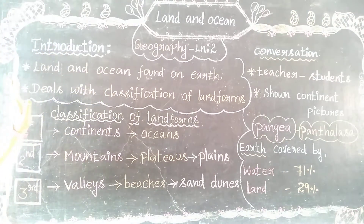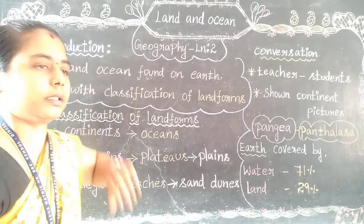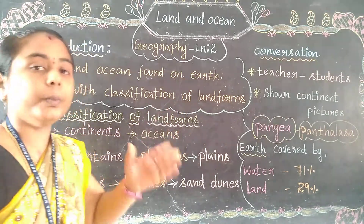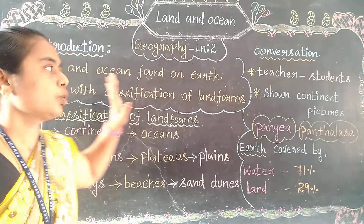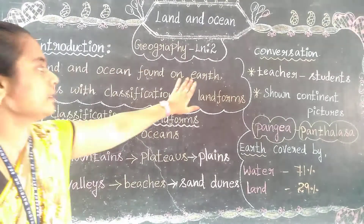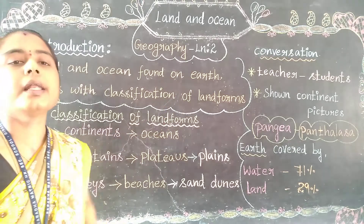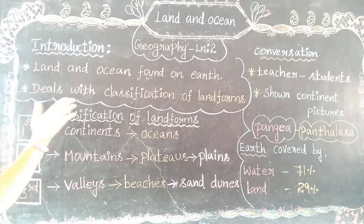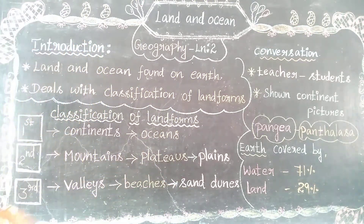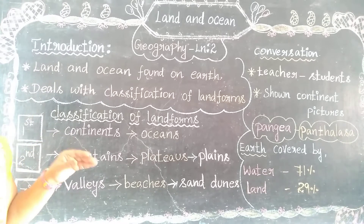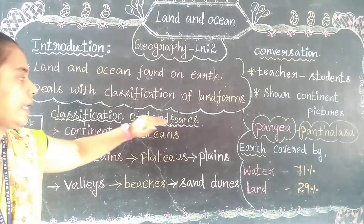In this introduction, land and ocean are found on Earth — 'boomy' in Tamil. We know that land and ocean are found on Earth, and they always deal with the classification of landforms. Classification means 'vagaikal' in Tamil. Landform means 'nilamaikku,' so we are going to learn about the classification of landforms — 'nilamaikku vagaikal.'